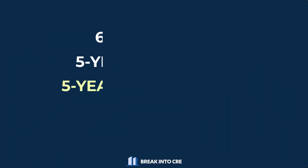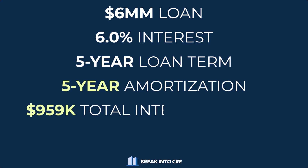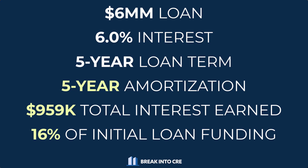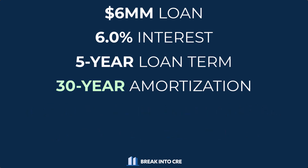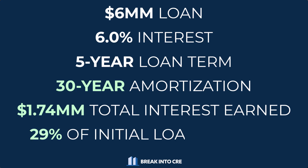To show this using the same example: in the five-year amortization scenario, the lender would earn just over $959,000 in interest payments over that five-year term, which represents about 16% of their initial loan funding. But in the 30-year amortization scenario, that same lender could expect to earn over $1.7 million during that same five-year loan term, which represents over 29% of their original capital investment.